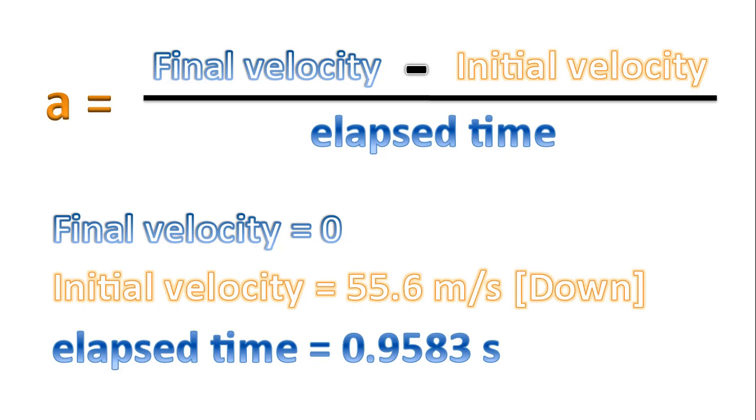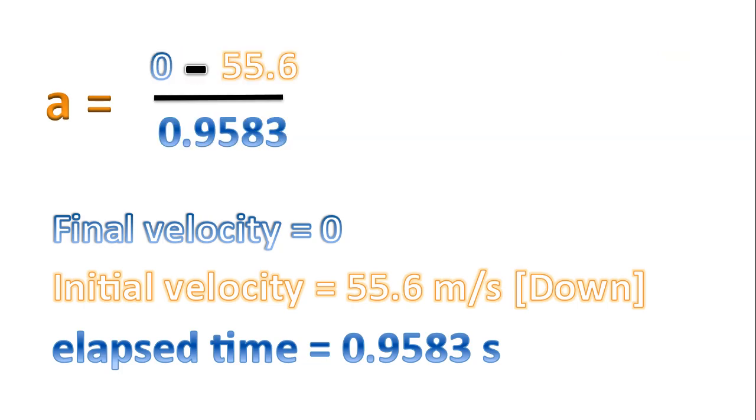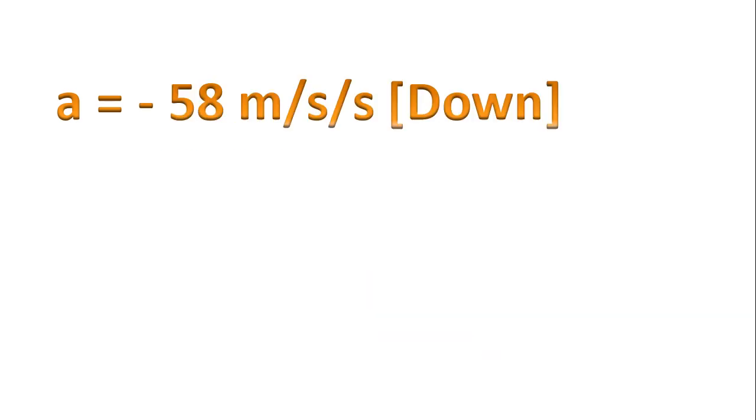And now we substitute our numbers into our formula. And there's our acceleration, negative 58 meters per second, per second down.